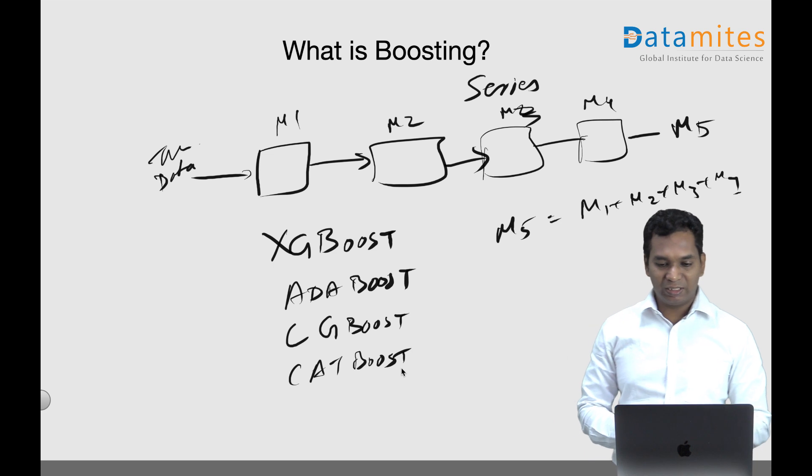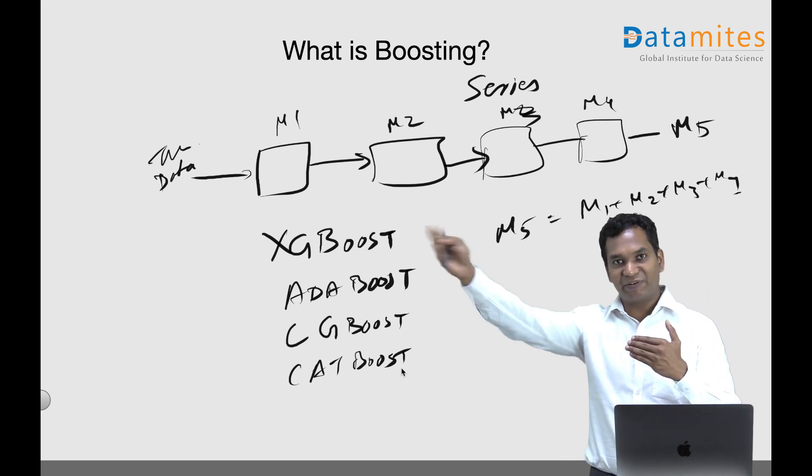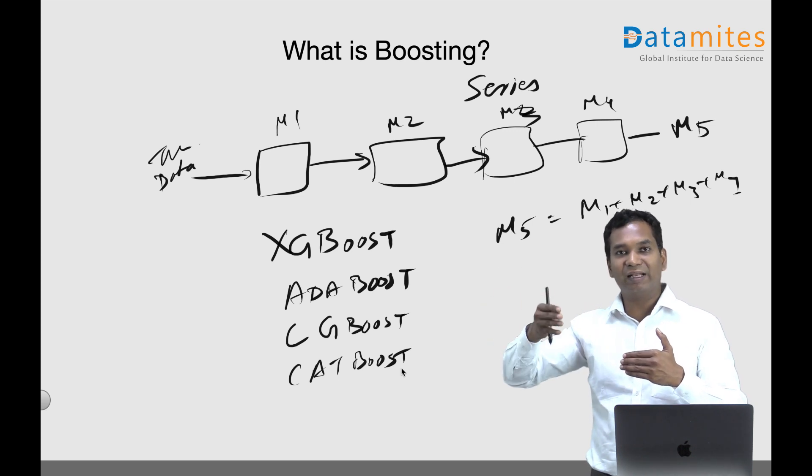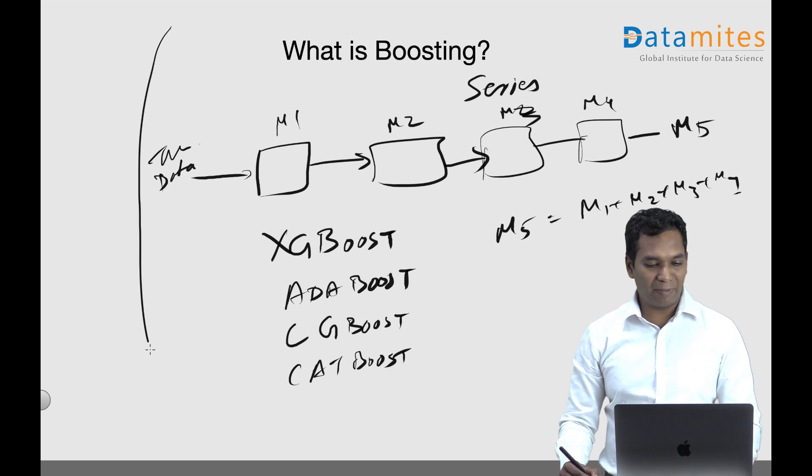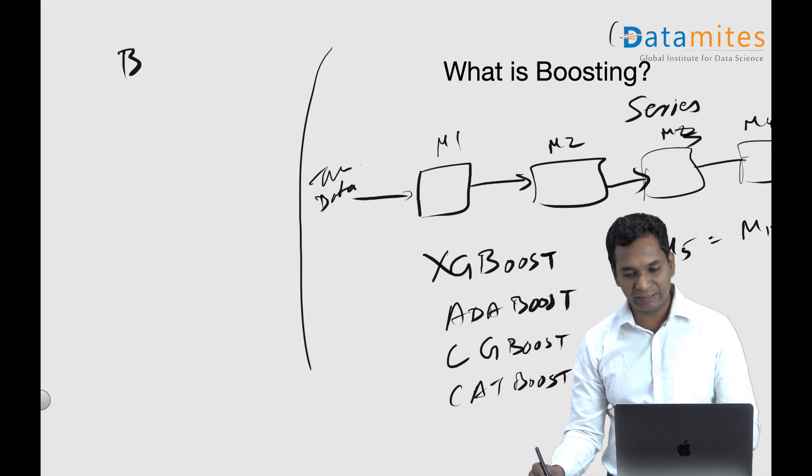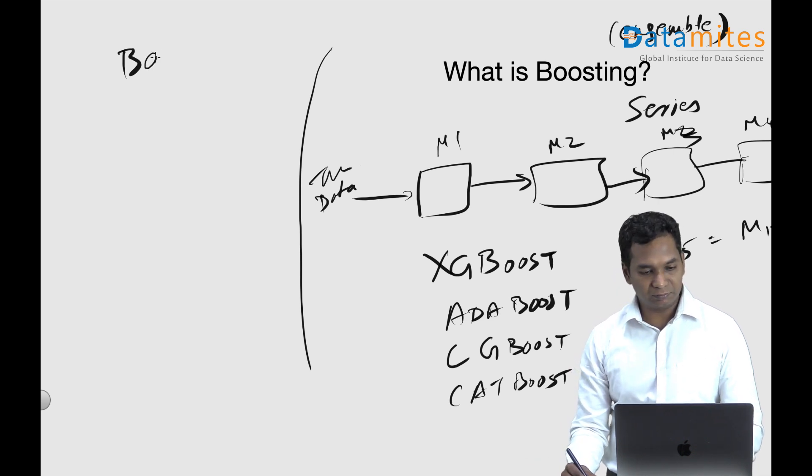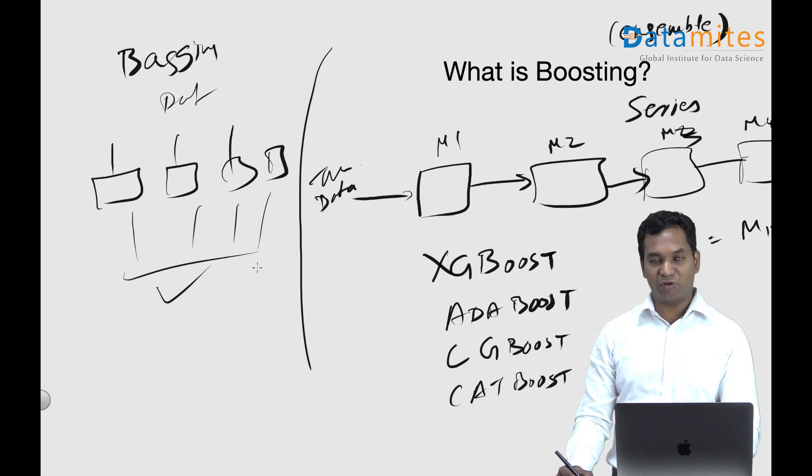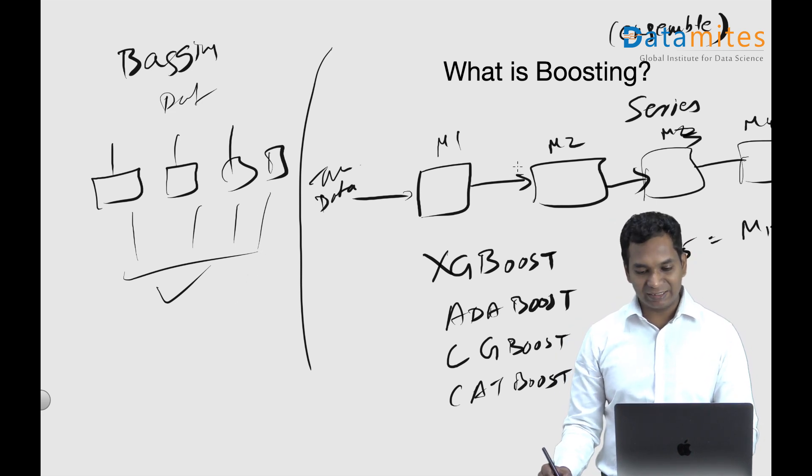To summarize, boosting builds multiple models in series, and every model learns from the previous model. The contrasting term is bagging, which is also an ensemble technique. Bagging does it in parallel—you take the data, process it in parallel, and take a majority vote or average based on whether it's classification or regression, whereas boosting does it in series.